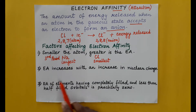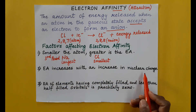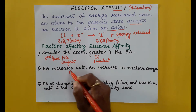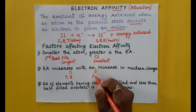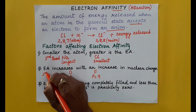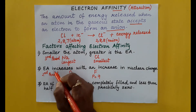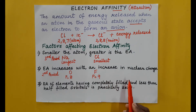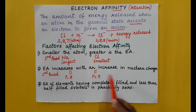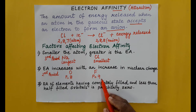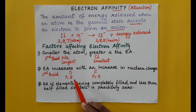The second factor is that electron affinity increases with an increase in nuclear charge. For example, oxygen has 8 protons and fluorine has 9 protons. The more the protons, the greater the force of attraction, so electron affinity is more. Fluorine has to release more energy than oxygen to gain an electron.